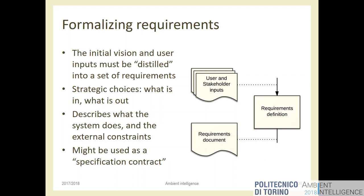Every project should have requirements defined up front — not just writing code and seeing what happens. You are implementing something to satisfy a given set of requirements discussed at the beginning. Imagine a commercial setting: you cannot guess what the client wants, because that leads to litigation. Define at the beginning what the system should do. Think of writing requirements as a contract with yourself.